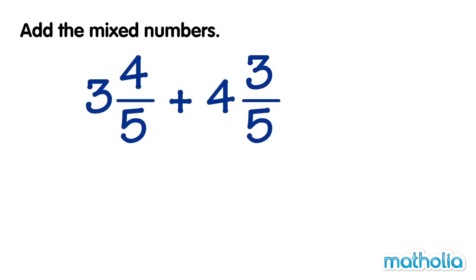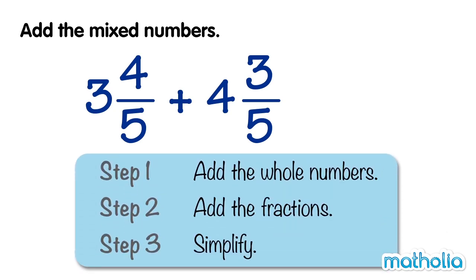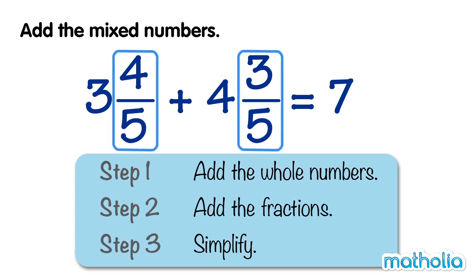Let's find 3 and 4 fifths plus 4 and 3 fifths. First, add the whole numbers: 3 plus 4 equals 7. Next, add the fractions. These are like fractions, so we add the numerators and keep the denominator the same. 4 fifths plus 3 fifths equals 7 fifths.